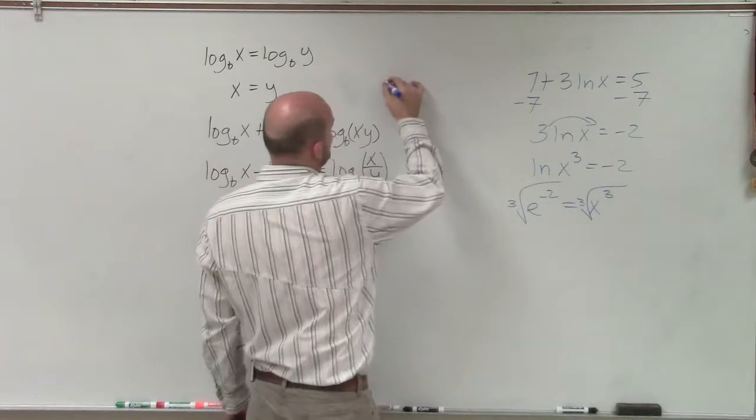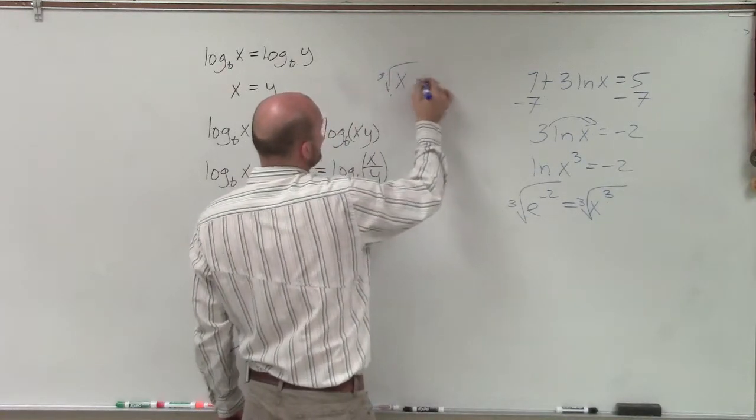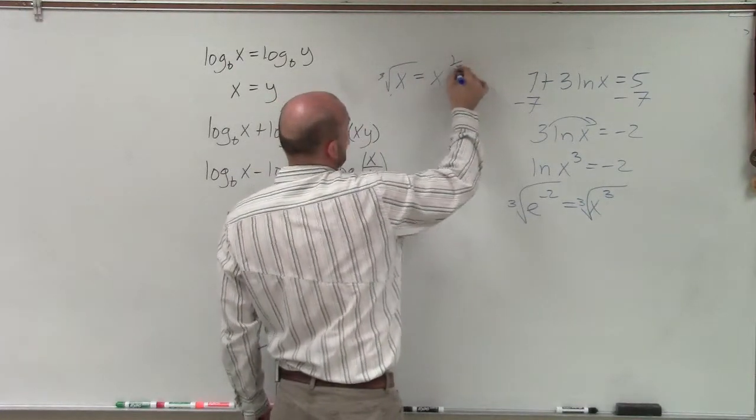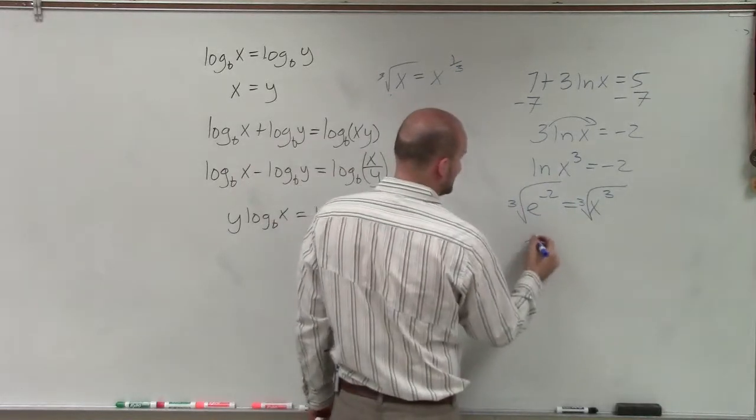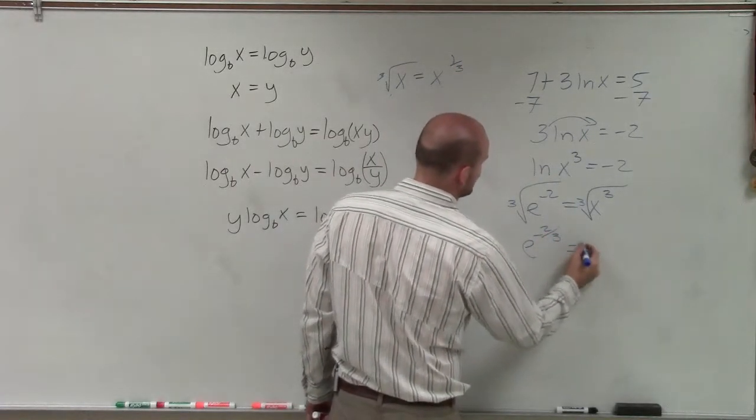And remember, the cube root of x is equal to x to the 1/3. So therefore, this is e to the negative 2/3 is equal to x.